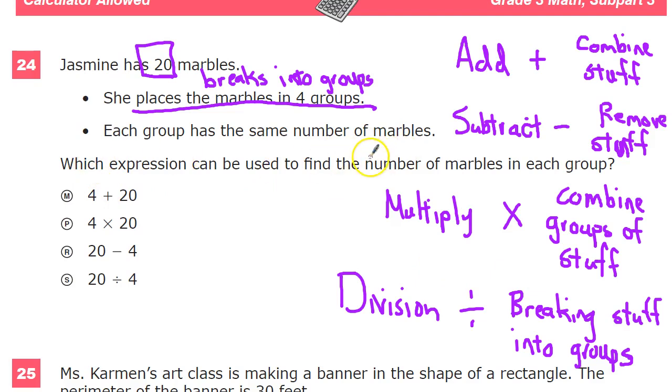Which expression can be used to find the number of marbles in each group? Well, she's not combining stuff, so that's out. She's not removing stuff, so that's out. She's not combining groups of stuff, so that's out. She's breaking stuff into groups, so that is a division answer. So the answer to number 24 is S.